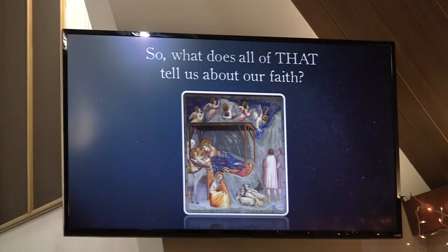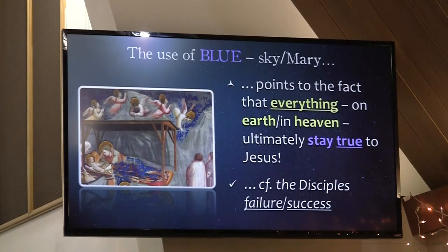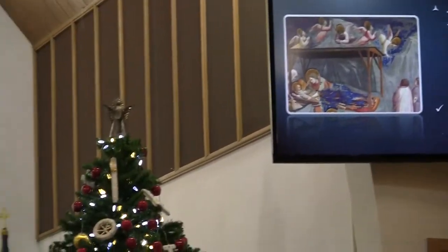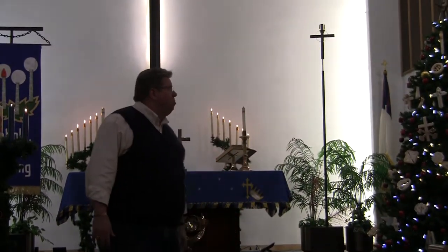So what does all this tell us about our faith? The use of blue by Giotto to depict the sky and Mary, I think, points to the fact that everything — literally everything in all creation, those things in heaven and those things on earth — ultimately stays true to Jesus. They can't help but stay true to Jesus. Now, as Amelia rightly pointed out when we looked more closely at the sheep, even as faithful as we are, we will turn away. Our attention will be diverted away from the one who was born. But at the end of the day, everything on earth and in heaven ultimately stays true to Jesus.